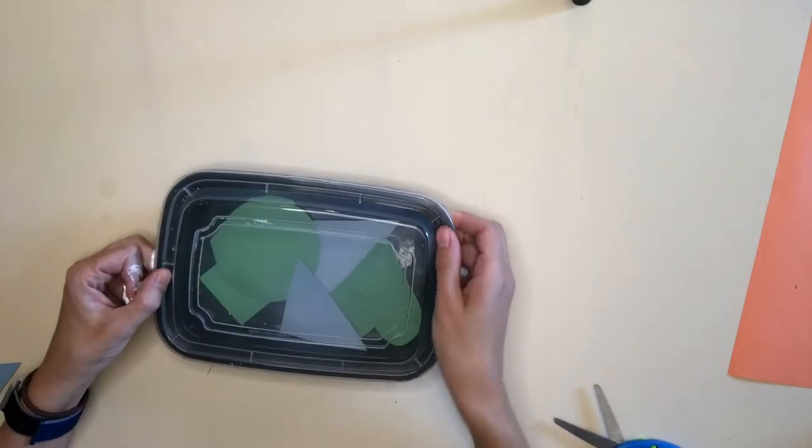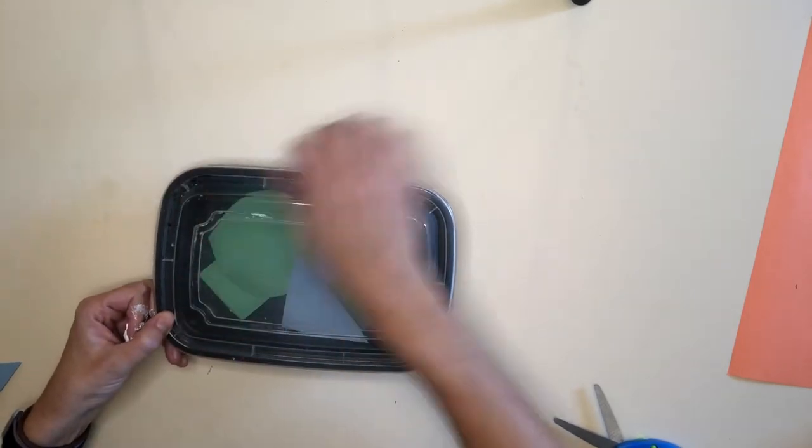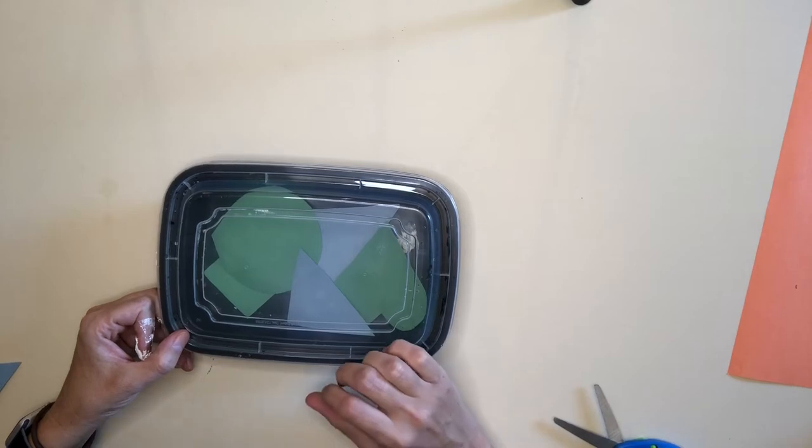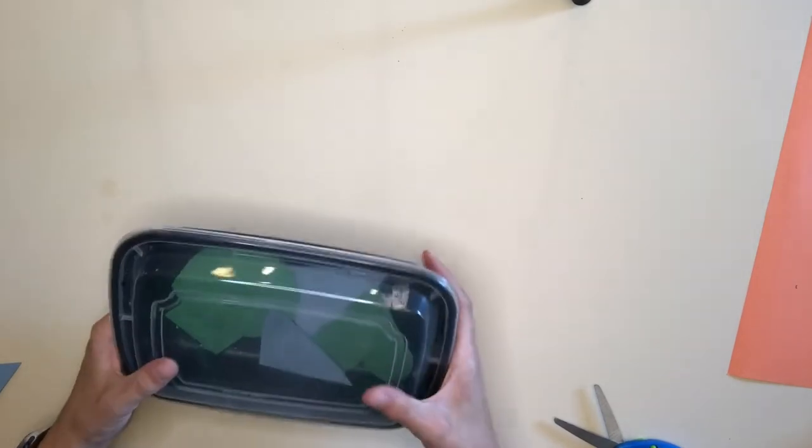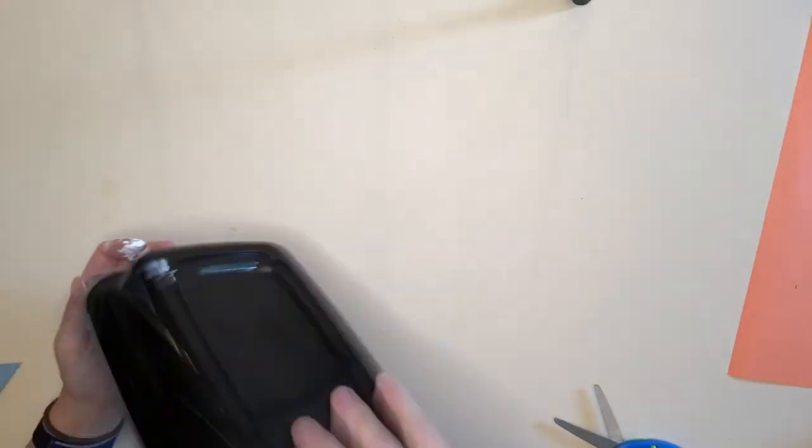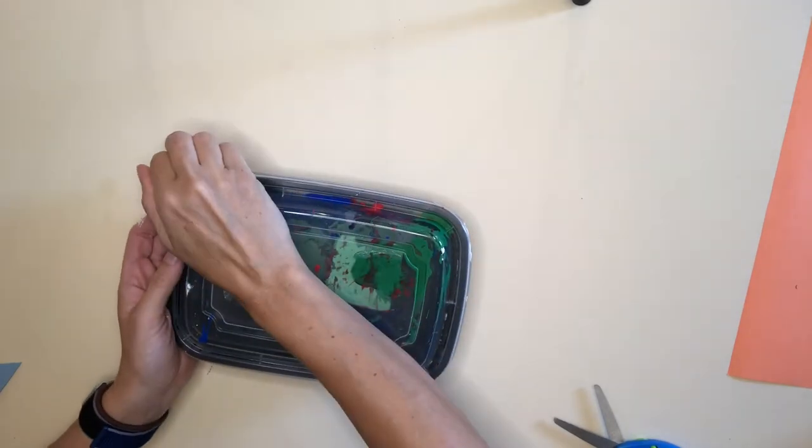Now I'm going to put my lid on to my container and seal it up tight. And are you ready for the best part? It's time to shake! Here we go. I'm going to shake it upside down and inside out. Let's see how much paint we can get on there. Oh look, they're even sticking to the top right now. Shake, shake, shake! Nice. Oh, look at that. Try one more time.